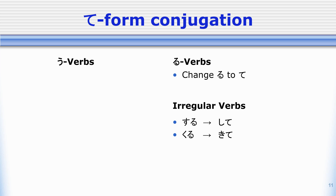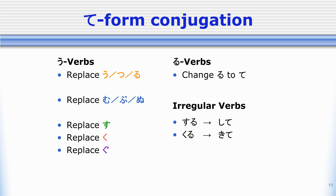The other set of conjugations we have to keep in mind is how we change u-verbs to te-form. These ones are a little bit more complicated. If the verb ends in u, tsu, or ru — so for example, au, matsu, or kaeru — then we change them into te-form by adding a small tsu plus te. So for example: atte, matte, kaete.